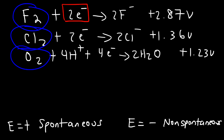These elements — fluorine, chlorine, oxygen — are nonmetals, and nonmetals tend to have a strong desire for electrons, so nonmetals tend to be oxidizing agents. They cause other substances to be oxidized by taking away electrons. The strongest oxidizing agent among them is fluorine because it has the highest cell potential and the strongest desire to take electrons from something.